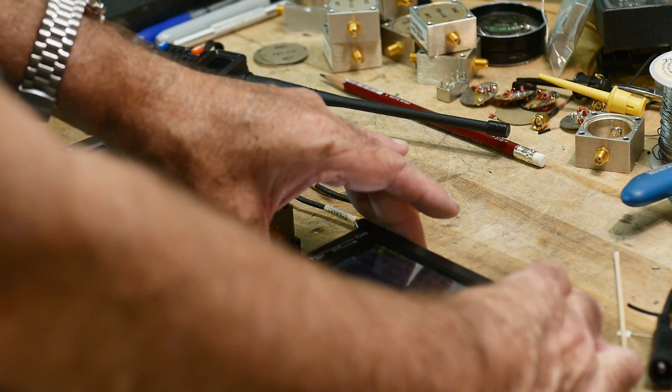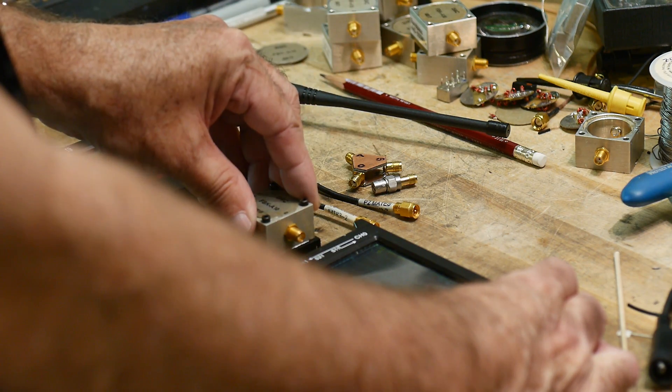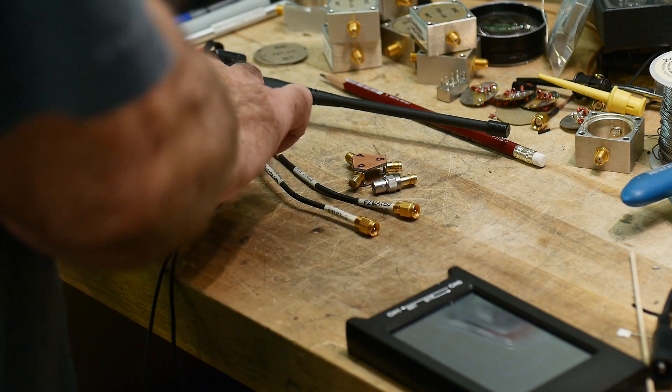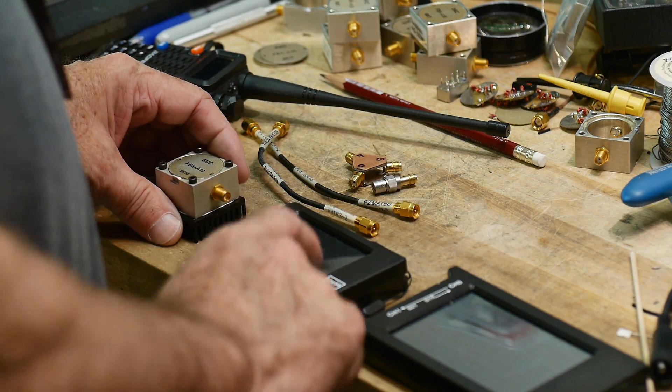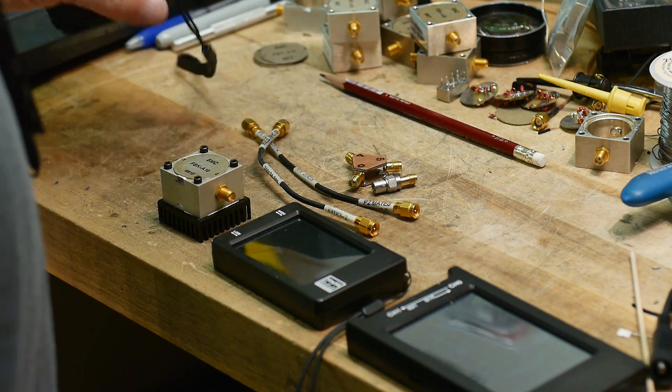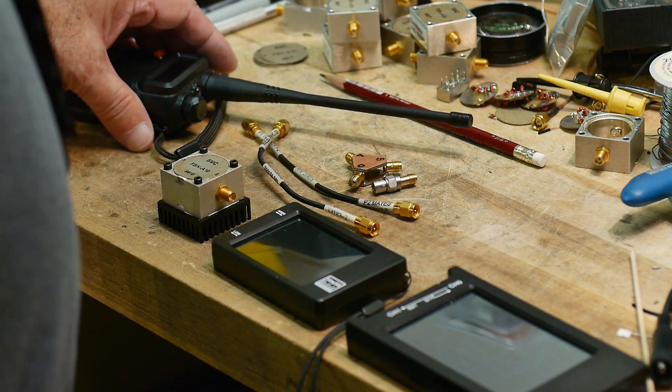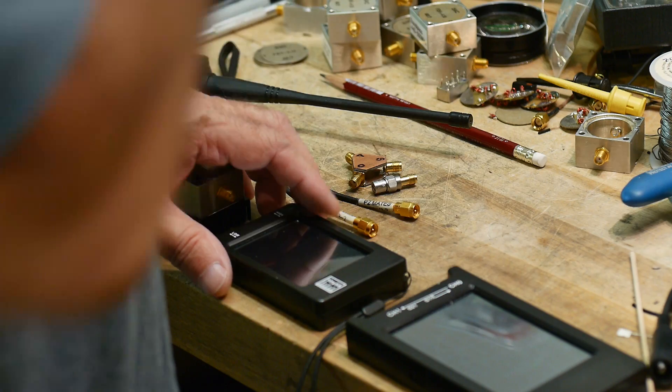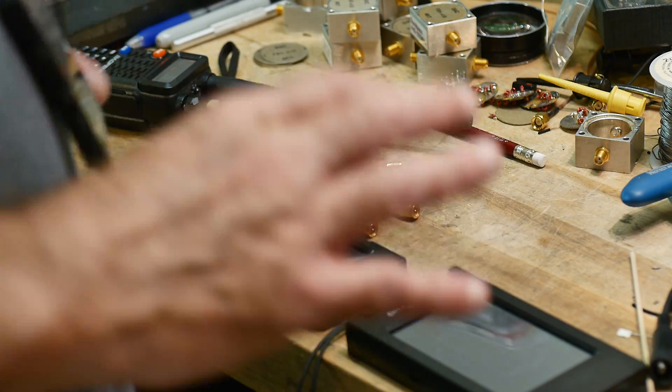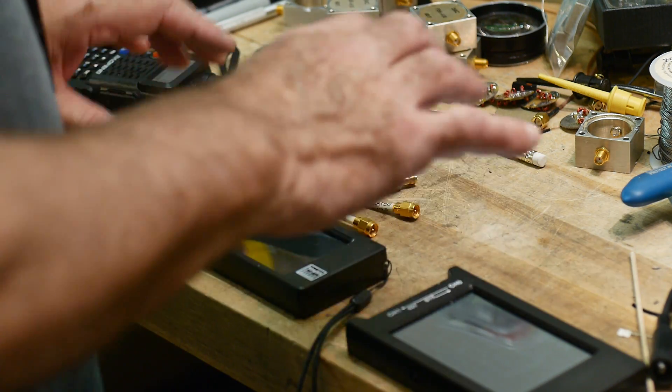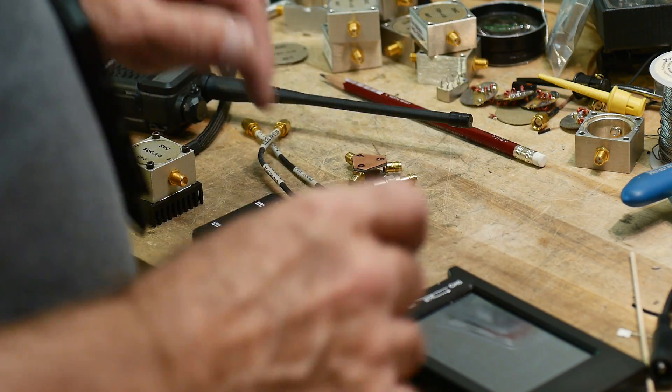So I'm going to use my NanoVNA to check my load, and then once the load checks out, we'll use the load with the TinySA using the sniffer port, and we'll transmit into the load and see if everything looks good. Let me get things set up so I can get a good camera angle. I know people like to see the display nice and crisp.